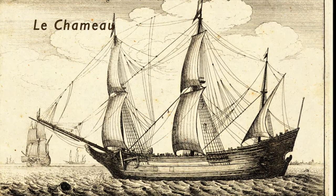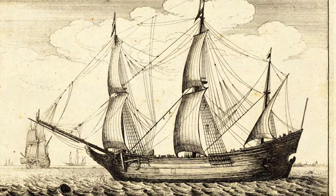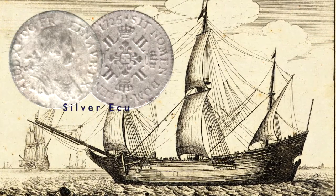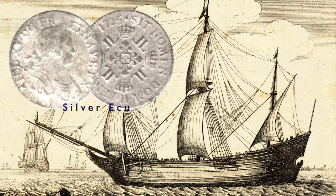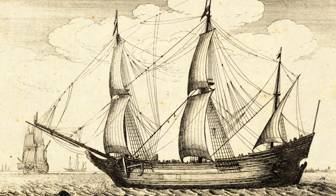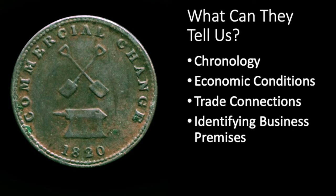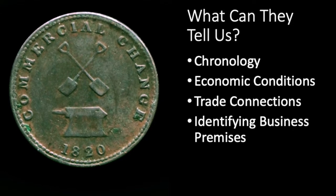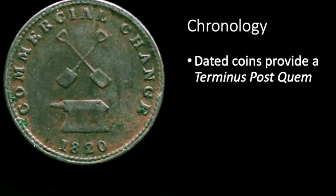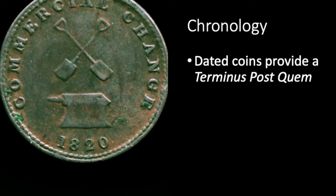Probably the best Canadian example was the wreck of Le Chameau near Louisbourg in 1725. Le Chameau was carrying a large shipment of gold, silver, and copper coins when she struck the rocks, and a group of treasure hunters salvaged most of these coins in 1965. One of the more obvious uses of coins for archaeologists is to date the deposits in which they're found. The basic principle is that the deposit can be no earlier than the date of the latest coin found in it — something archaeologists call terminus post-quem.